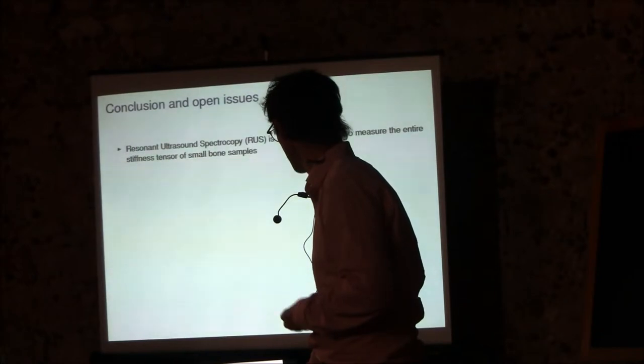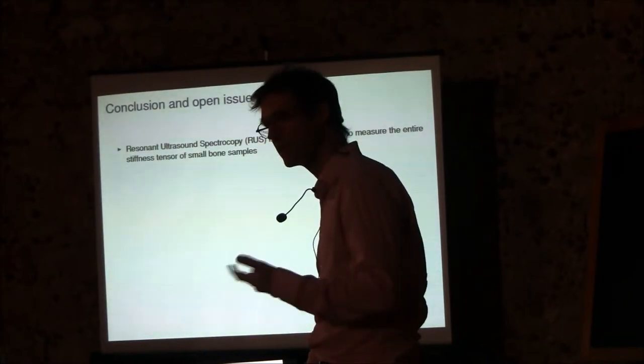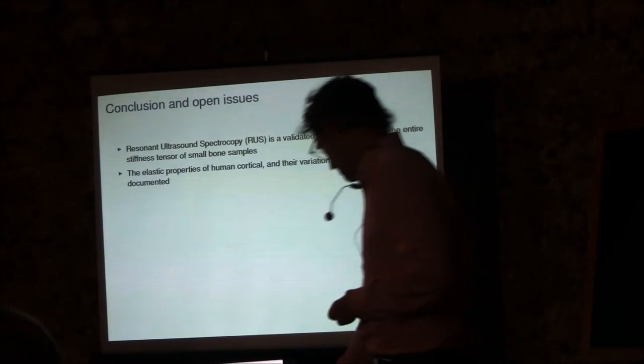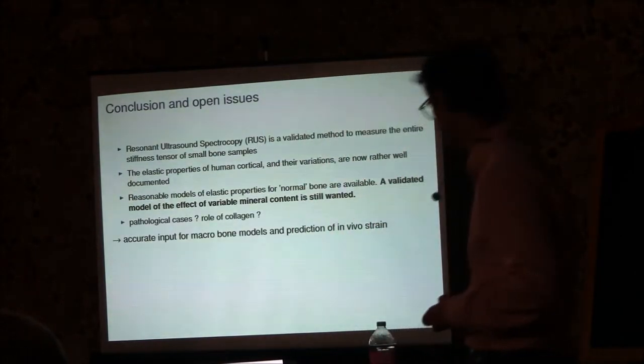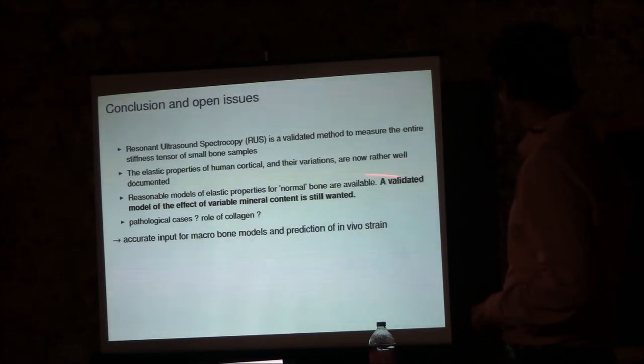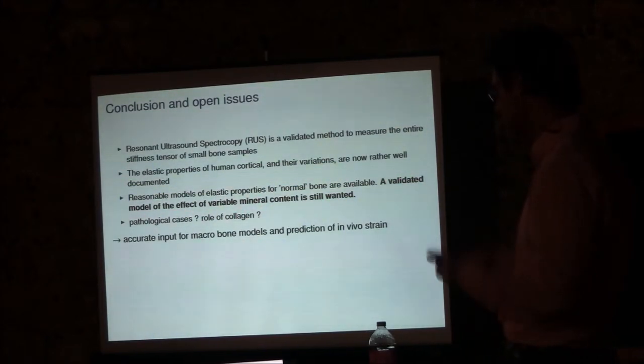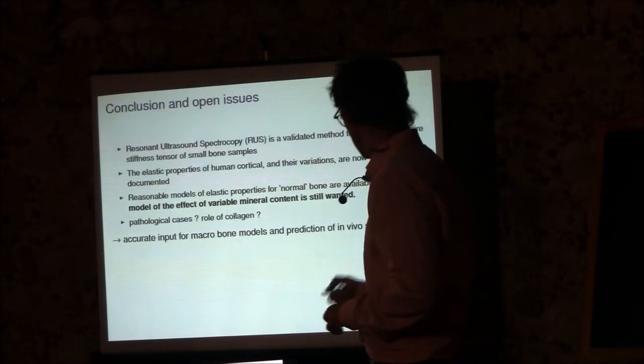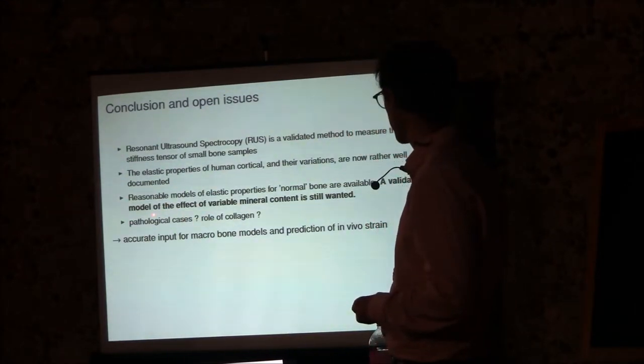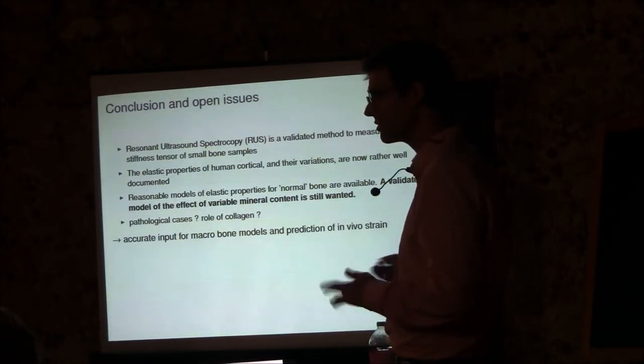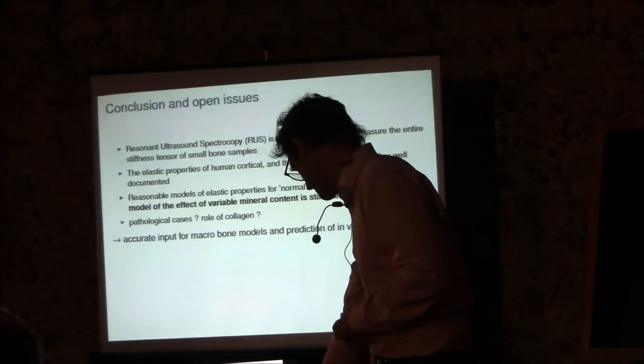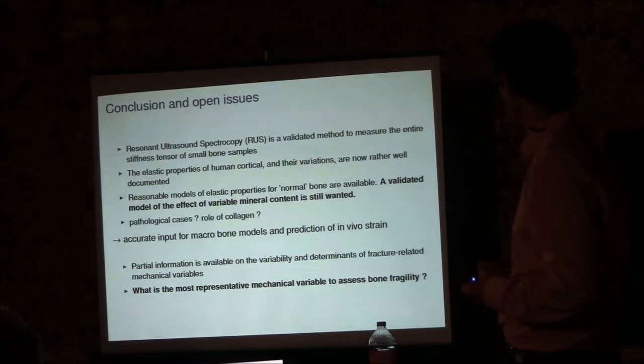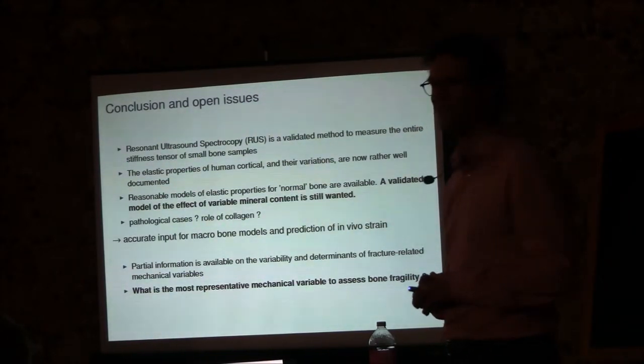So conclusion: resonant ultrasound spectroscopy is now a well-validated technique to measure the entire stiffness tensor of cortical bone samples. The elastic properties of the bones are now rather well documented. We need a validated model of the effect of the variable mineral content, because now there is, I think, good data to test such a model. So we should do this. We have not been talking about pathological cases or about the role of collagen. Our data indicates that the role of collagen is not so important for elasticity. And I conclude on this. Thank you for your attention.